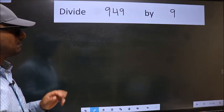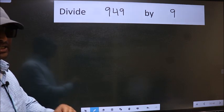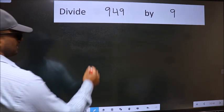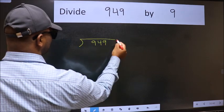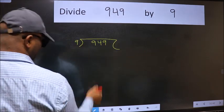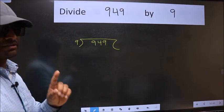Divide 9.49 by 9. To do this division, we should frame it in this way. 9.49 here and 9 here. This is your step 1.